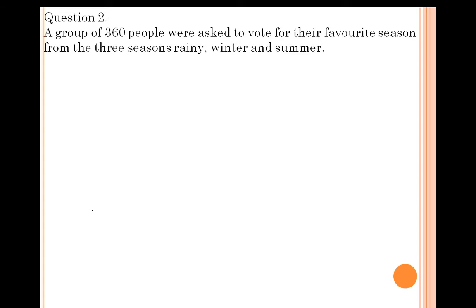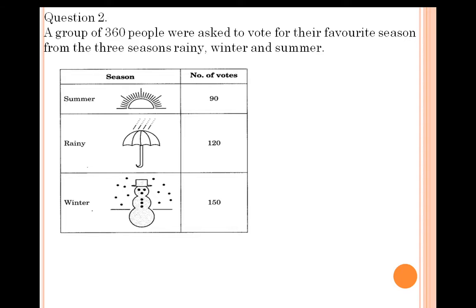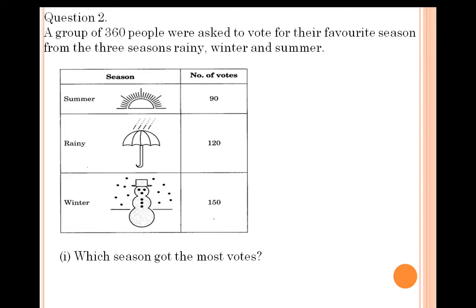Question 2: A group of 360 people were asked to vote for their favourite season from Rainy, Winter, and Summer. The table shows: Summer got 90 votes, Rainy got 120, and Winter got 150. The first question asks which season got the most votes. Winter got the most votes — 150.